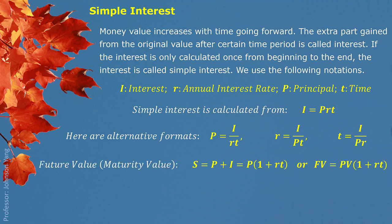When we add interest together with principal, it gives us the maturity value, also called future value. So we can use S to represent maturity value or FV to represent future value, and PV for present value. We have S equals P multiplied by 1 plus RT, or FV equals PV multiplied by 1 plus RT. This formula is called solving for future value.